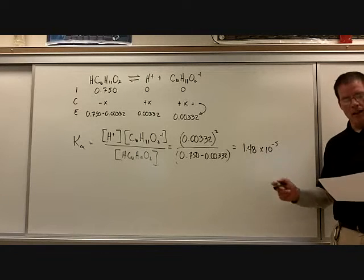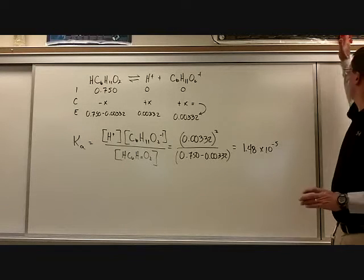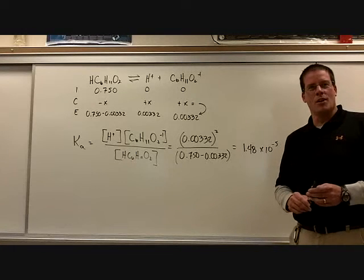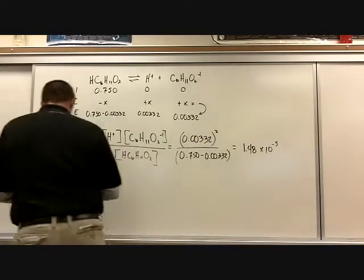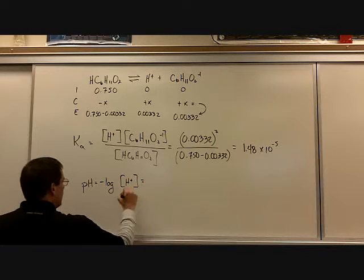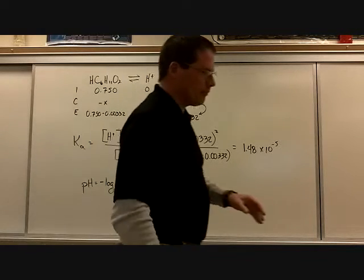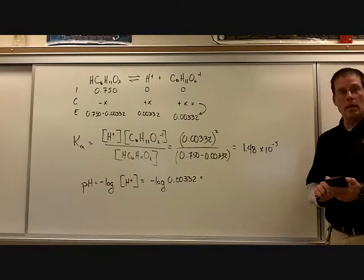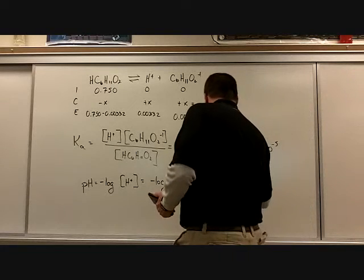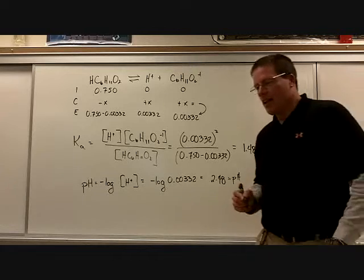Part B says calculate the pH of this solution. How are we going to be able to do that? Take the negative log of the hydrogen ion concentration. The pH is 2.48.